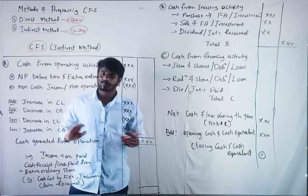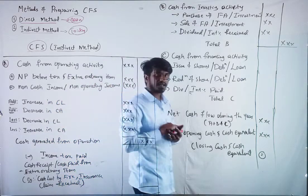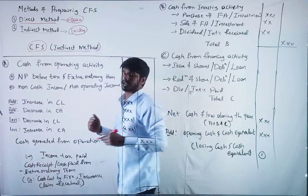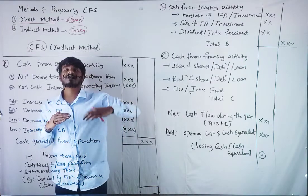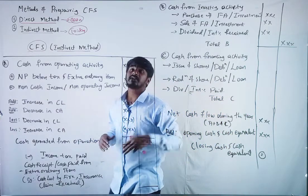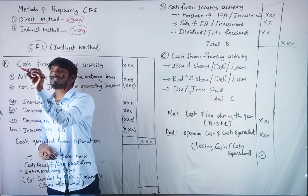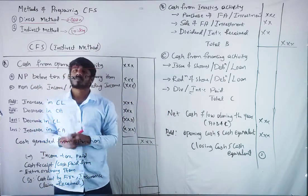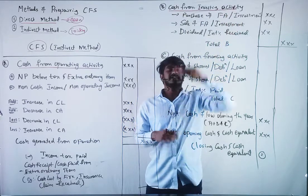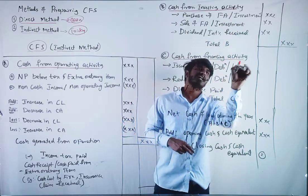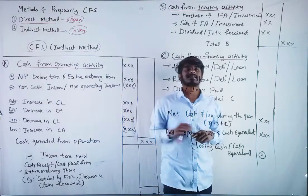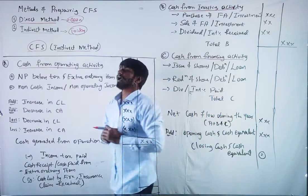Let us see the format of the cash flow statement. We will first look at the indirect method format. The direct method format is very easy — we'll go through that in the question directly. In the indirect method, whatever payments we receive or make, we divide those transactions into three activities: cash from operating activity, cash from investing activity, and cash from financing activity. We categorize all receipts and payments into these.